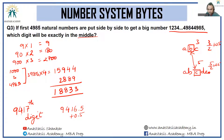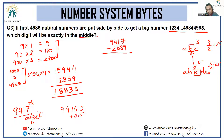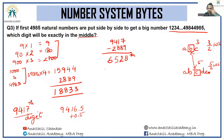Since each four-digit number uses 4 digits, divide 6528 by 4: 6528 / 4 = 1632. So I need the last digit of the 1632nd four-digit number.